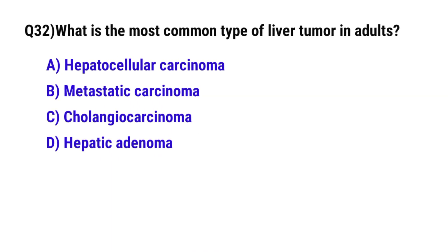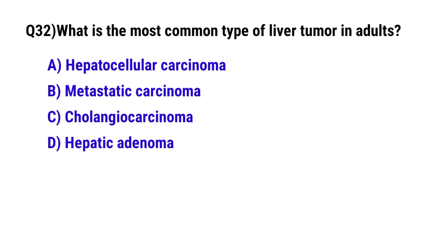Question number 32. What is the most common type of liver tumor in adults? The correct option is B. Metastatic carcinoma.